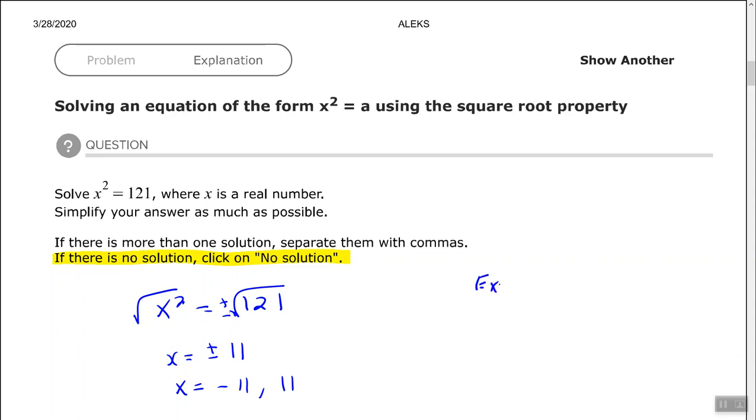For example, if we had x² = -25, if I tried to take the square root of each side, I could not get a real number solution from the square root of negative 25. We can get an imaginary number solution, but not a real number solution. So for this, that's where I would click on 'no solution' if I had a problem like that.